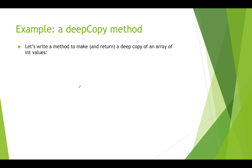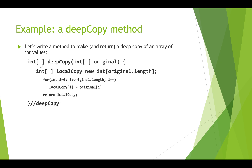What we often really want to do is pass an array to a function, make a deep copy of it, and pass that back. So let's write a method to make and return a deep copy of an array that holds ints. The method returns an int array, it's called deepCopy, and it takes in an int array called original. Inside the function, we create a local variable called localCopy as a new array of size original.length, then loop through and copy values from the original into the new array, and return localCopy.